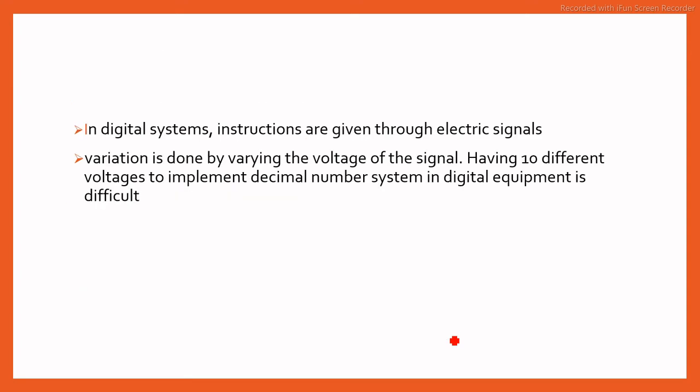The question is, why do we use other number systems? In digital systems, instructions are given through electrical signals. For example, our computer instructions move through electrical signals. The variation is done by varying the voltage of the signals. Having 10 different voltages to implement decimal number system in digital equipment is difficult.